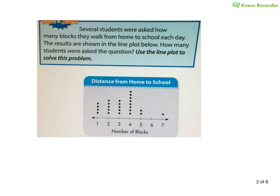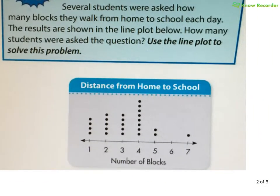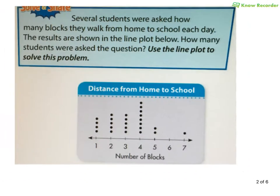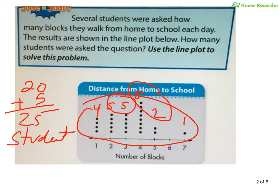This question asks, several students were asked how many blocks they walk to school each day. The results are shown. How many students were asked this question? This is the easiest type of question you're going to get in this type of math. Literally, every single one of these dots is a student. So, you have four here, five here, five here, eight, two, one. I got a fast ten, another fast ten. So, I got 20 plus four plus one is five. Twenty-five students were asked this question. That's just how easy this stuff is.